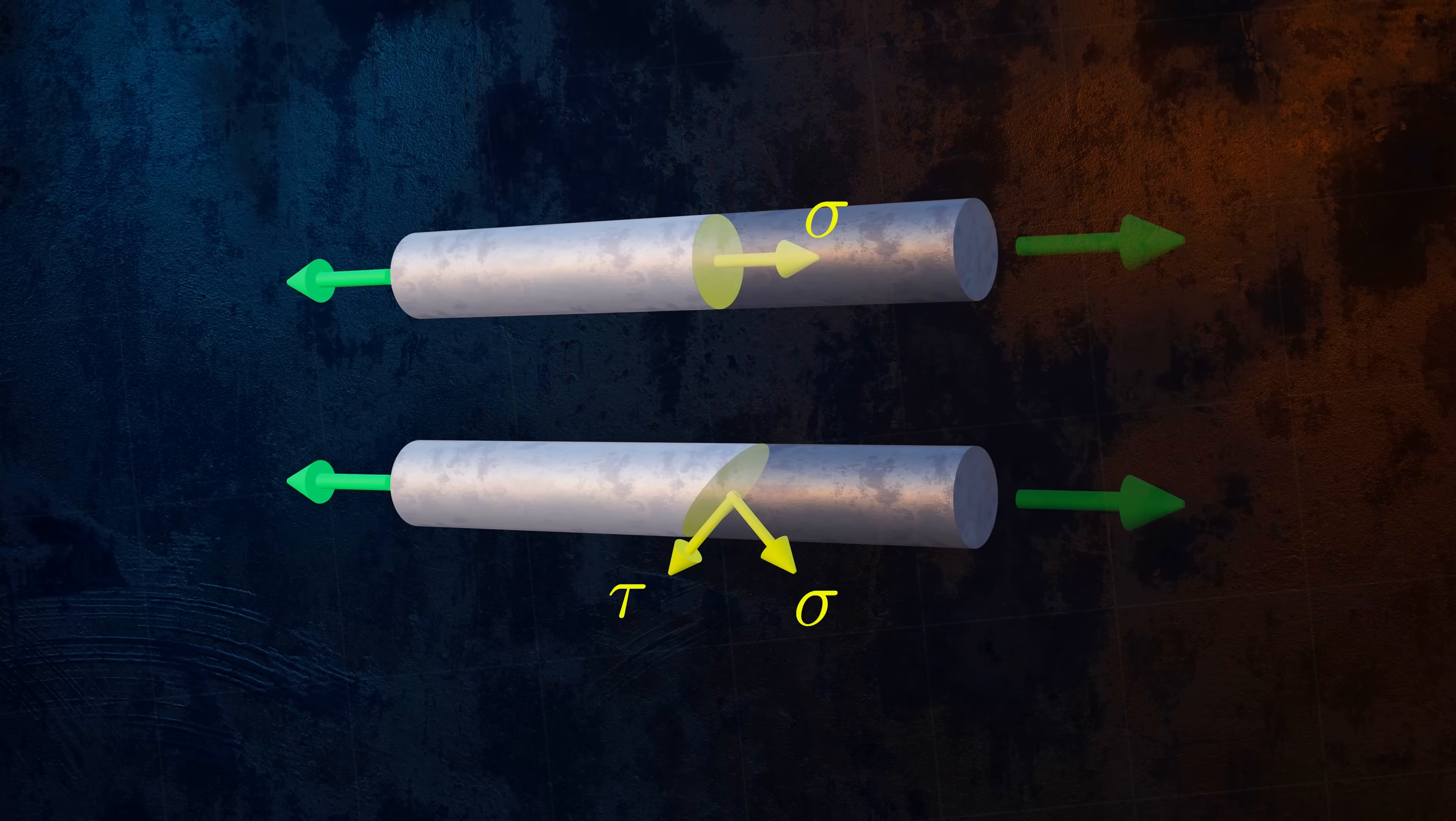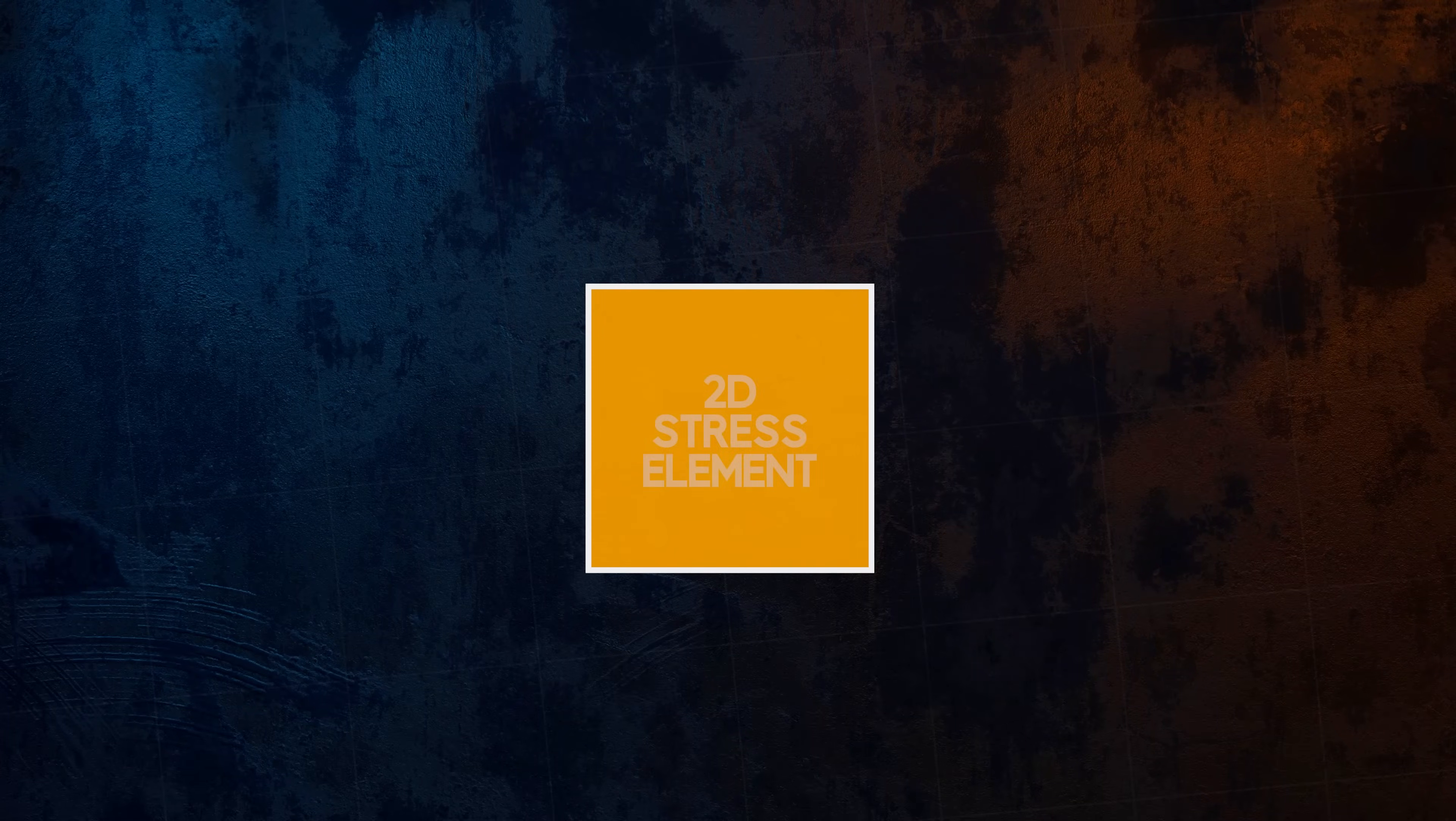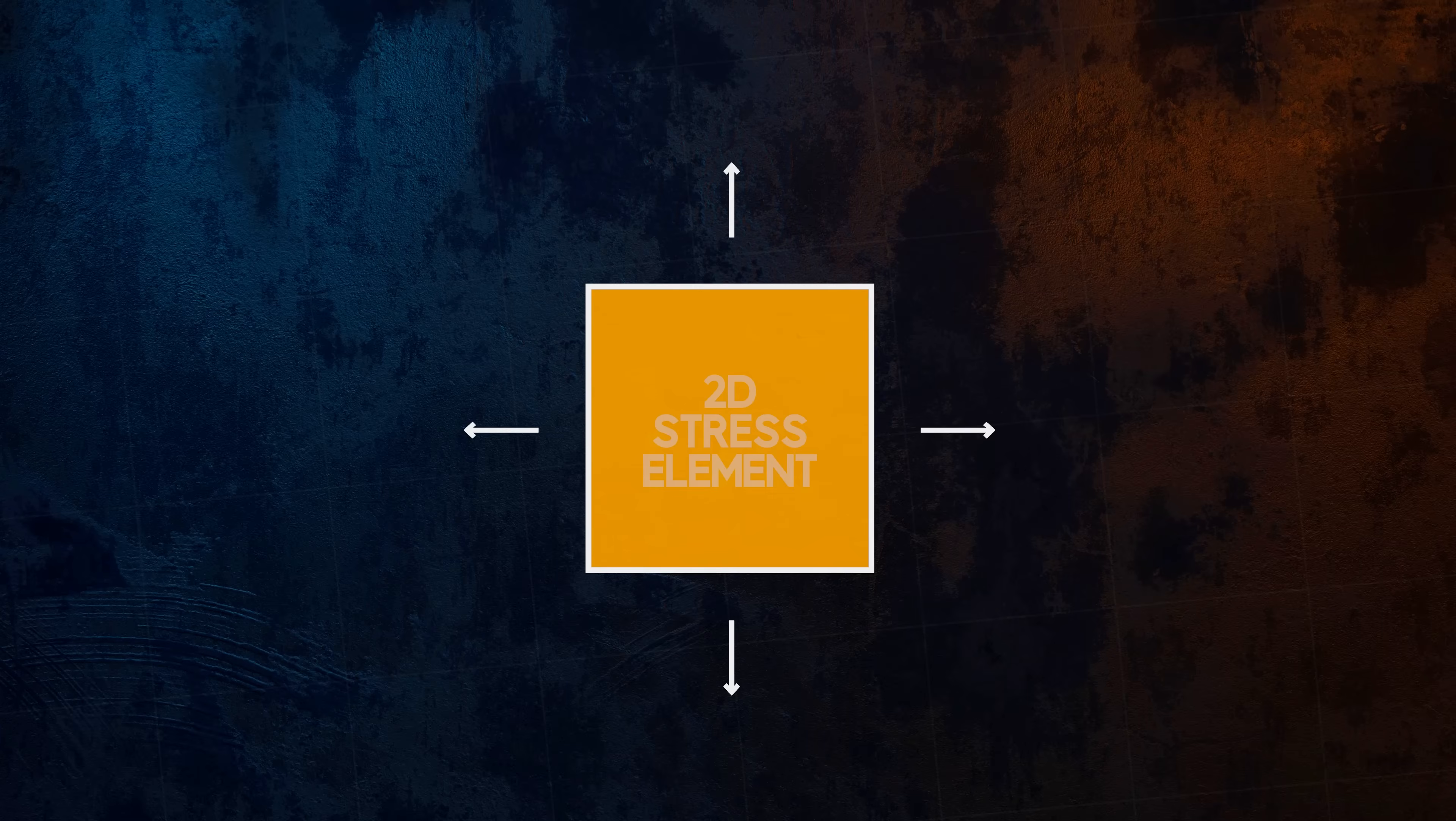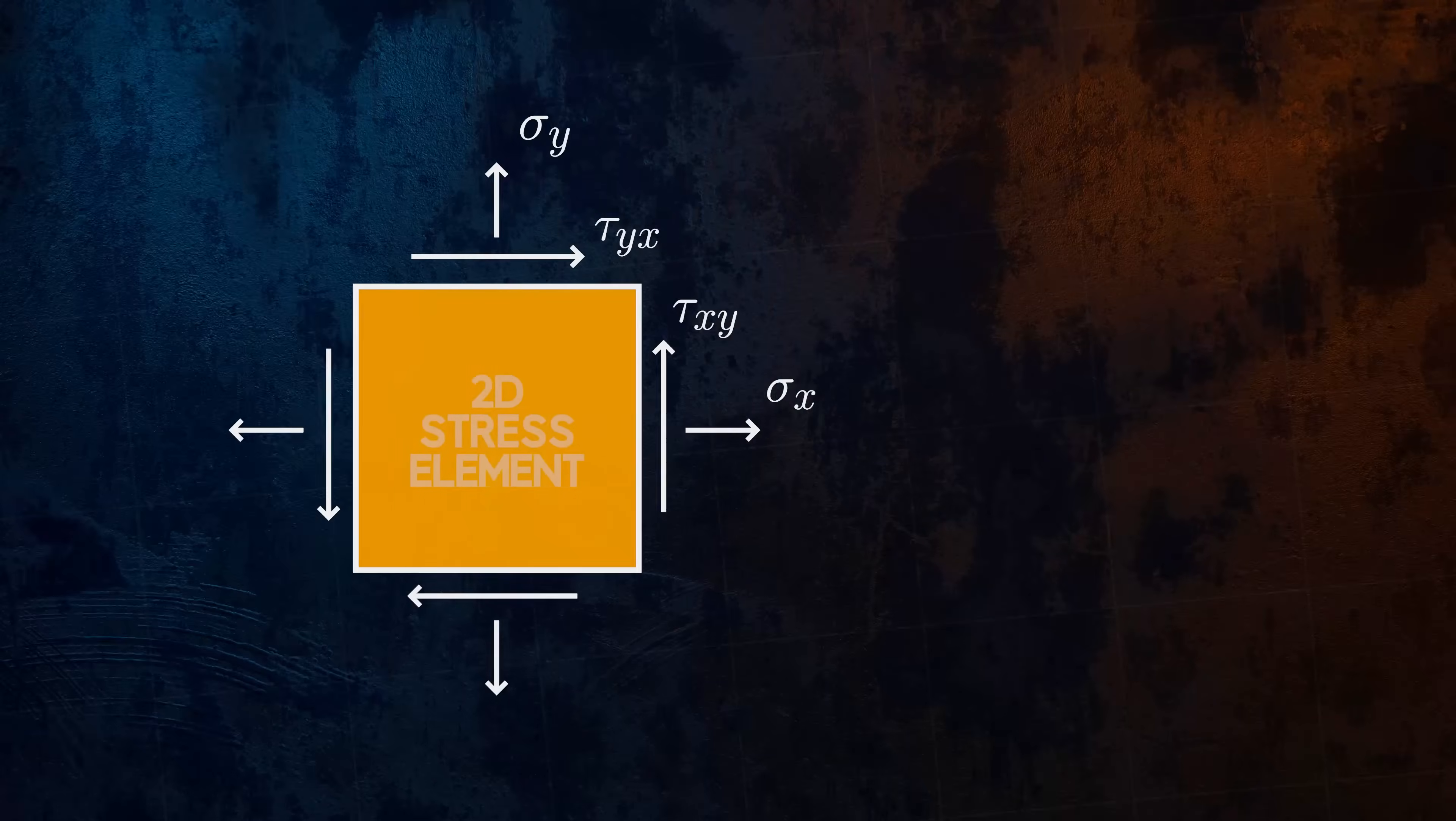The stress element is commonly used to represent the stresses acting at a single point within a body. This is the stress element showing the normal and shear stresses acting at a single point for a two-dimensional case. For a three-dimensional case, the stress element looks like this.